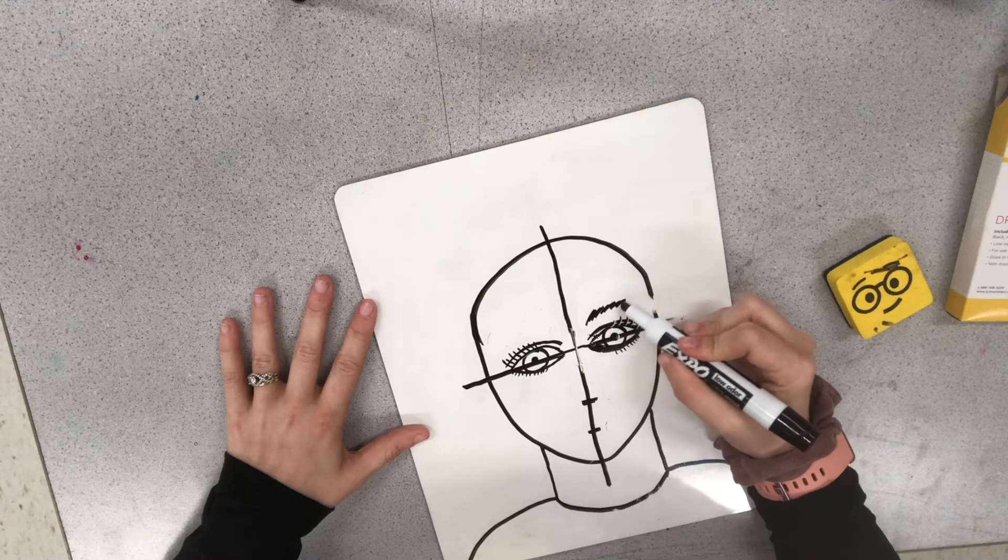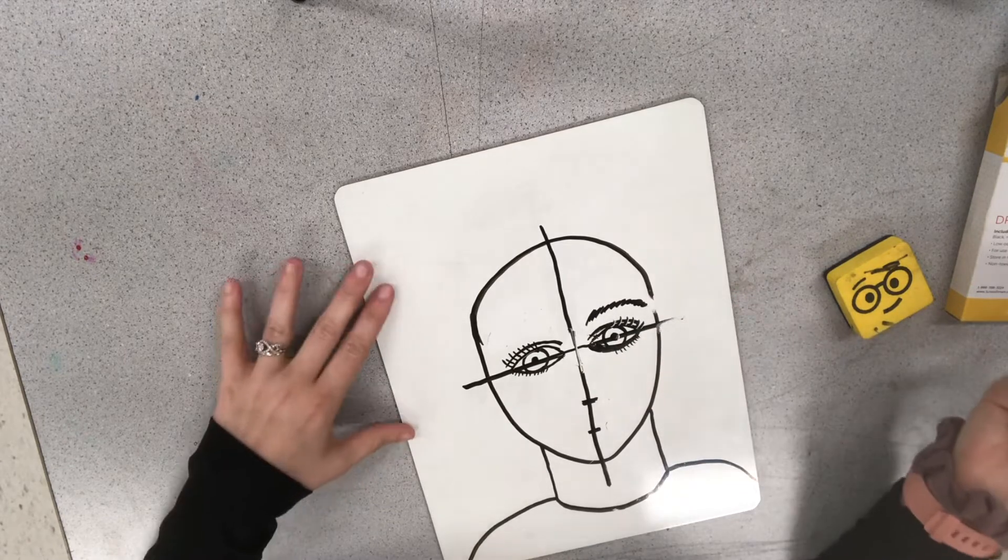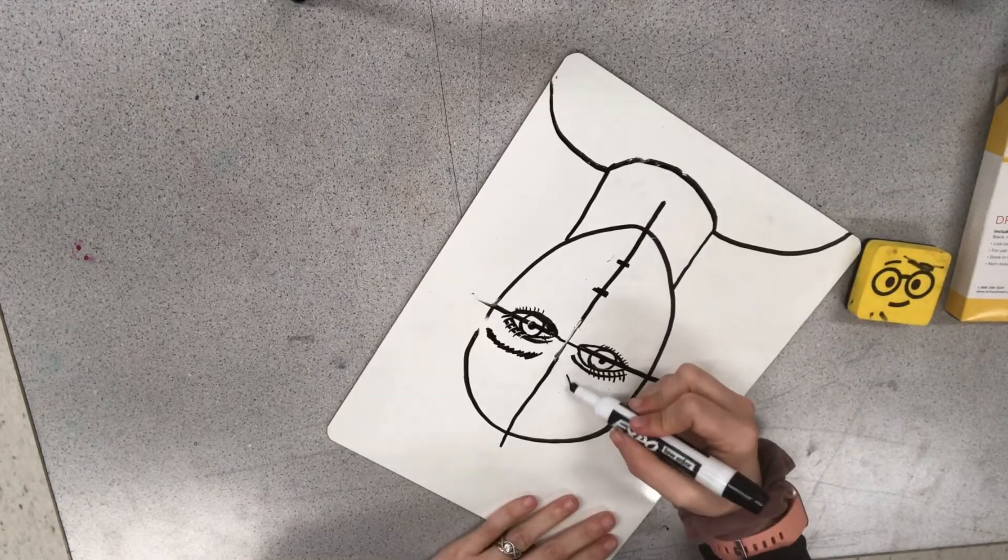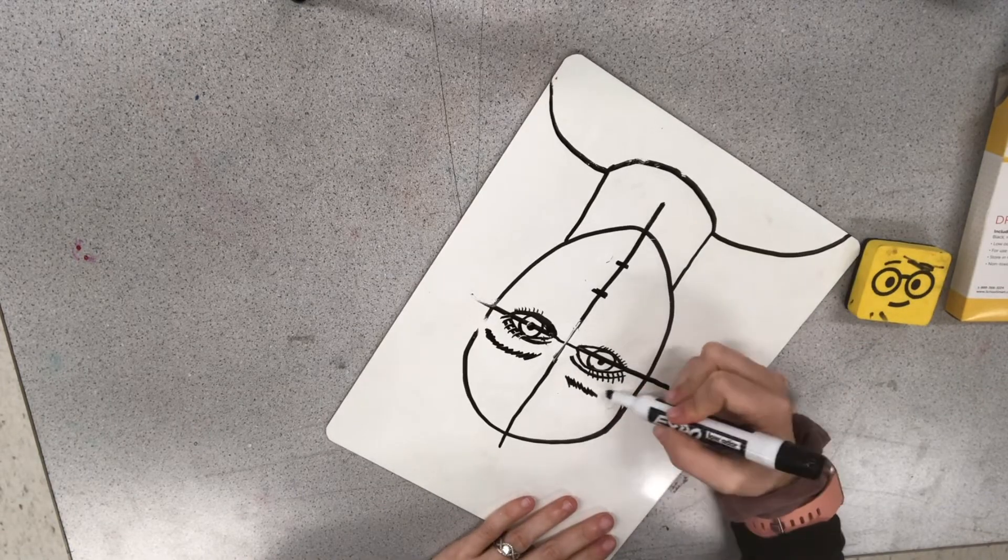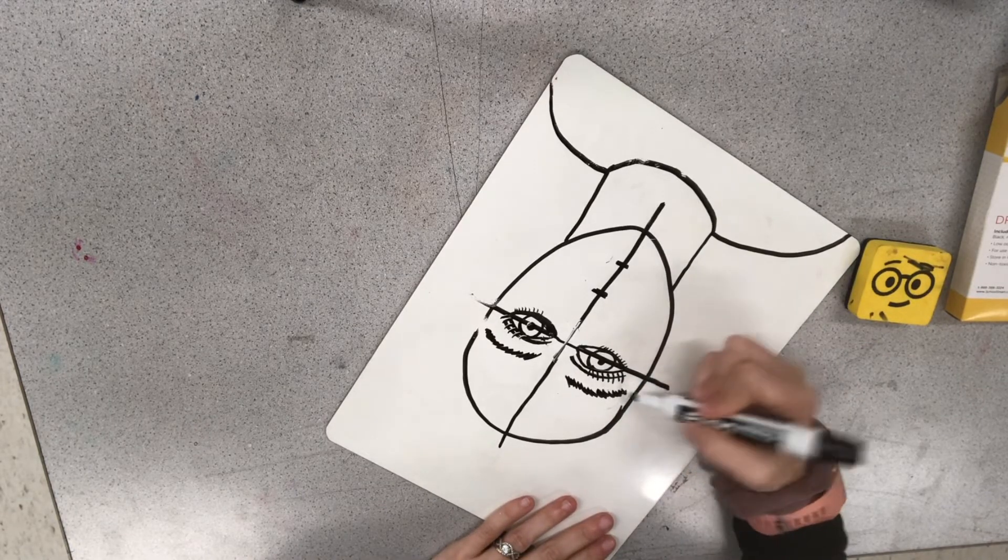I draw a bunch of little lines to show the hairs of the eyebrows. And they kind of arch like a rainbow.